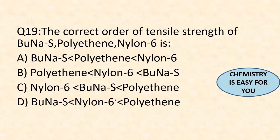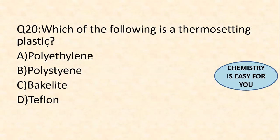Question 19: the correct order of tensile strength of Buna-S, polyethene, and Nylon 6. Tensile strength order: Nylon 6 > polyethene > Buna-S. Nylon 6 has the maximum tensile strength, followed by polyethene, and finally Buna-S. Option A is the correct answer. Write this order down as it will be helpful later.